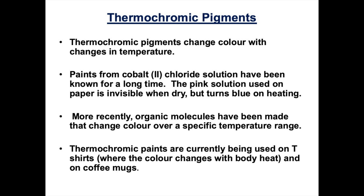There are a number of uses associated with thermochromic pigments. They can be found in t-shirts that change colour when you exercise and when the body gets hotter. They can be found in coffee mugs that change colour when you put hot water in them. They can be found in baby spoons that change colour when the food is too hot for the baby. So there are lots of practical applications.